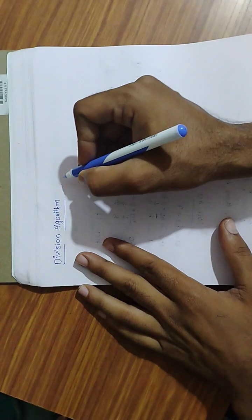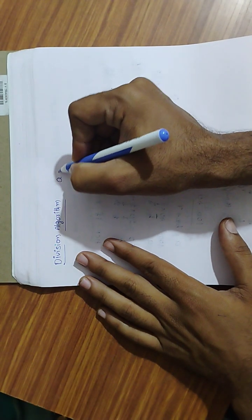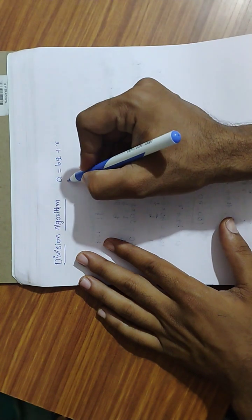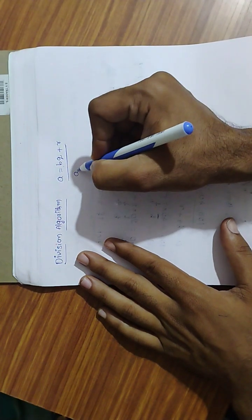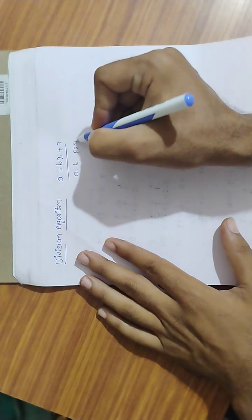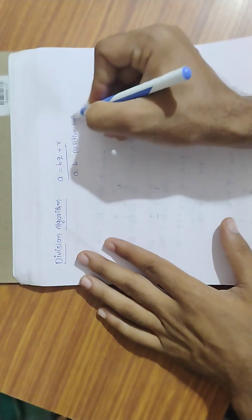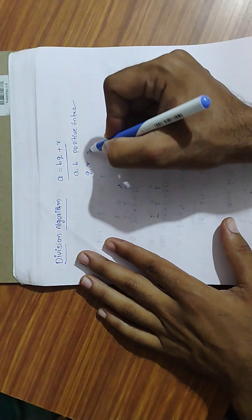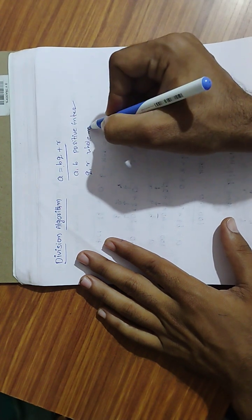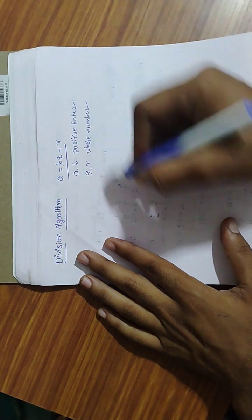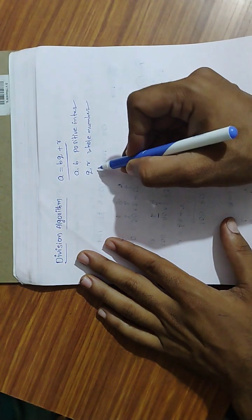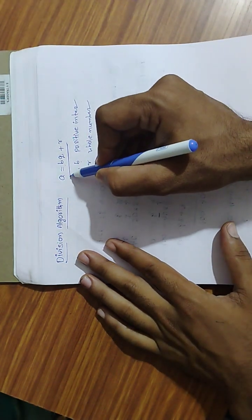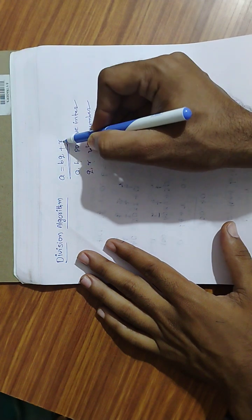Hello everyone, what is the division algorithm? A is equal to BQ plus R. It is a relation where A and B are positive integers, and Q and R are whole numbers. It satisfies this equation: A equals BQ plus R.